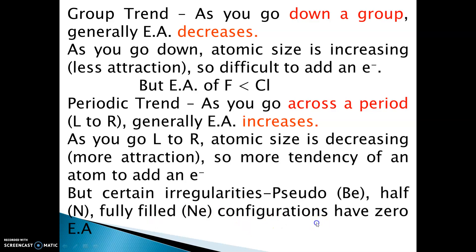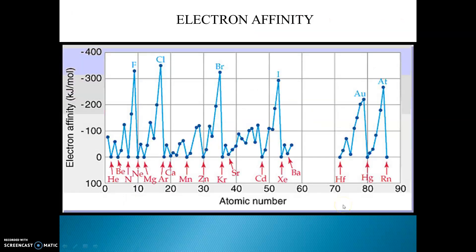For example, in the second period, beryllium, nitrogen, and neon have zero electron affinities as compared to other members. Looking at the graph of electron affinity versus atomic number: hydrogen has some electron affinity, but helium has zero electron affinity.